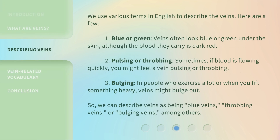We use various terms in English to describe veins. Here are a few. First, blue or green — veins often look blue or green under the skin, although the blood they carry is dark red. Second, pulsing or throbbing — sometimes, if blood is flowing quickly, you might feel a vein pulsing or throbbing. Third, bulging — in people who exercise a lot or when you lift something heavy, veins might bulge out. So we can describe veins as blue veins, throbbing veins, or bulging veins, among others.